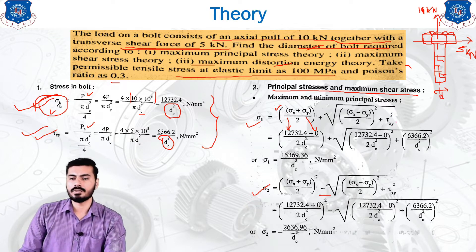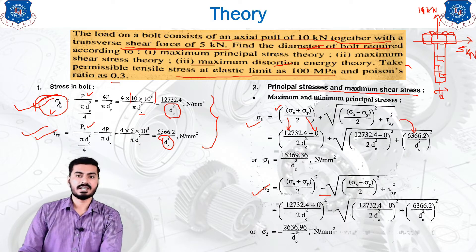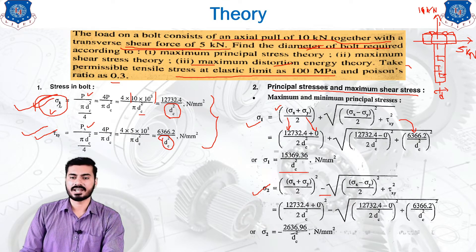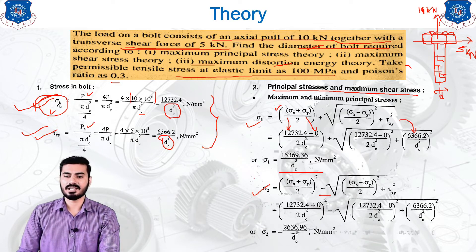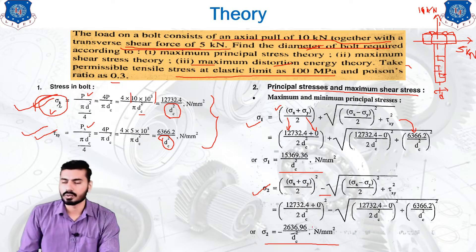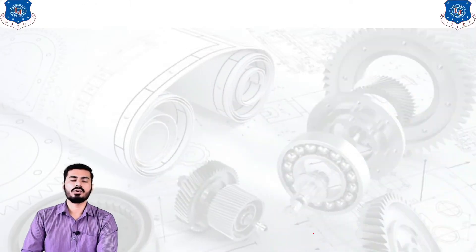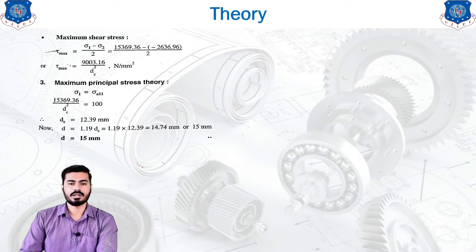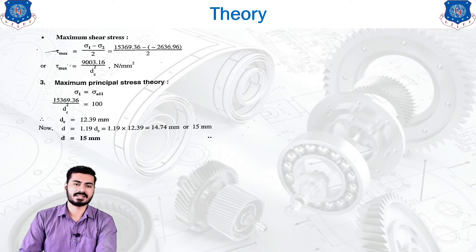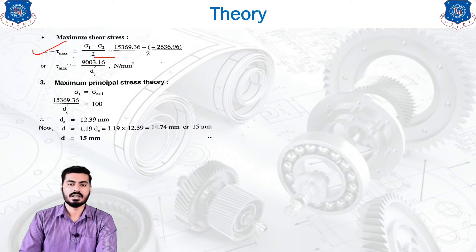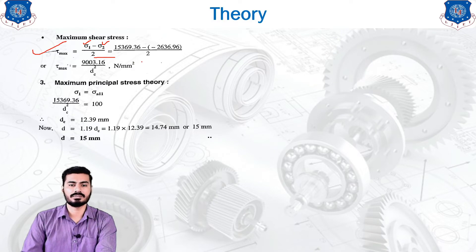Substituting the value of tau, already calculated in terms of dc, and simplifying gives sigma 1 in terms of dc. Similarly, altering the sign and simplifying gives sigma 2 in terms of dc. The maximum shear stress theory states that tau max equals sigma 1 minus sigma 2 divided by 2. Substituting the known values of sigma 1 and sigma 2 in terms of dc and simplifying gives the expression in terms of dc.